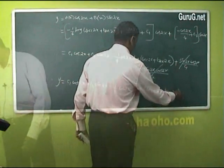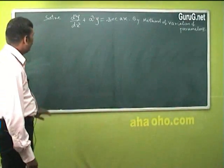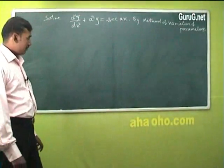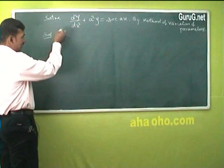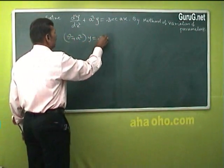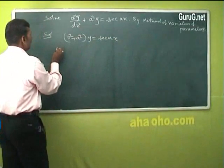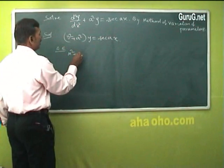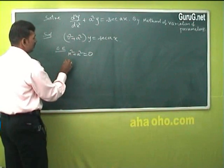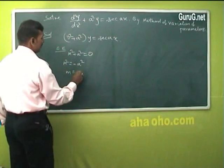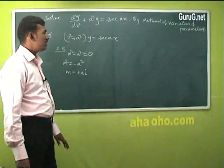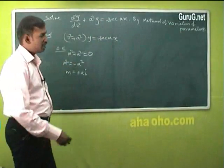The second problem: solve d²y/dx² + a²y = sec(ax) by the method of variation of parameters. First find the auxiliary equation: m² + a² = 0, giving m² = −a², so m = ±ai. We convert the non-homogeneous equation to a homogeneous one by setting the right-hand side to zero and solving.